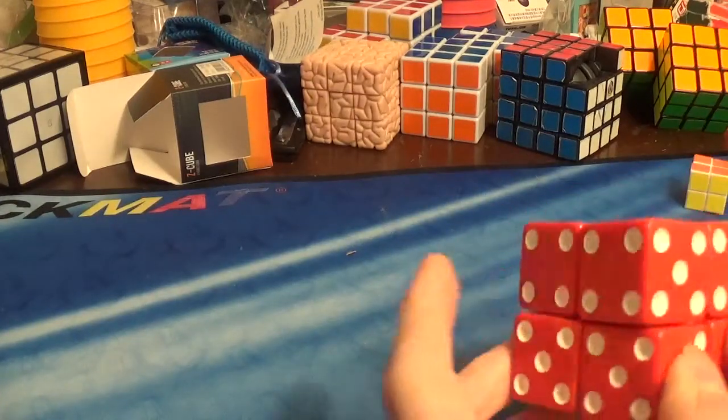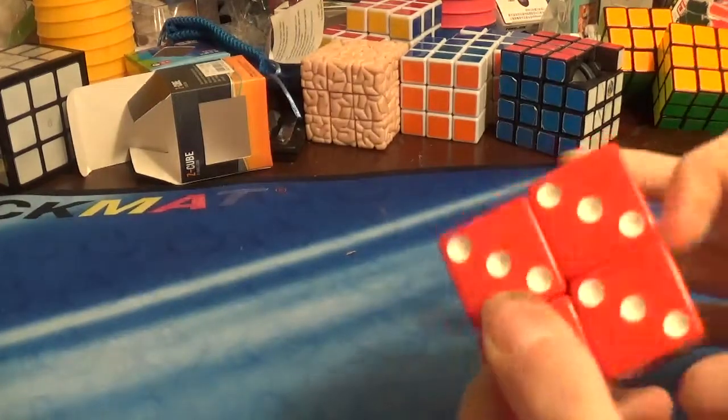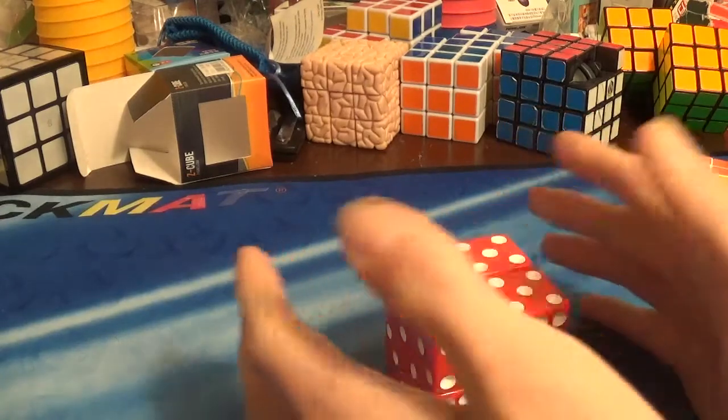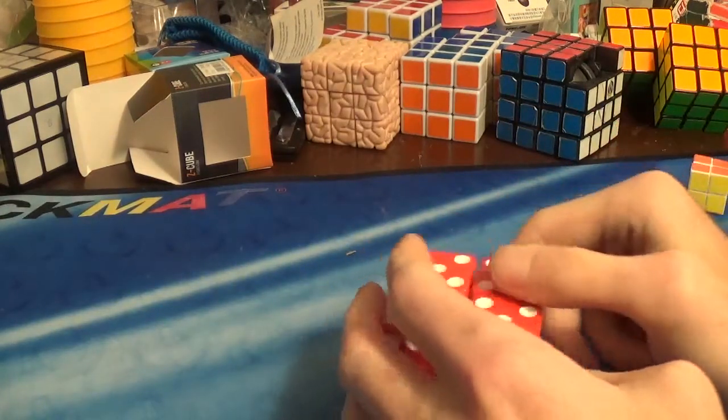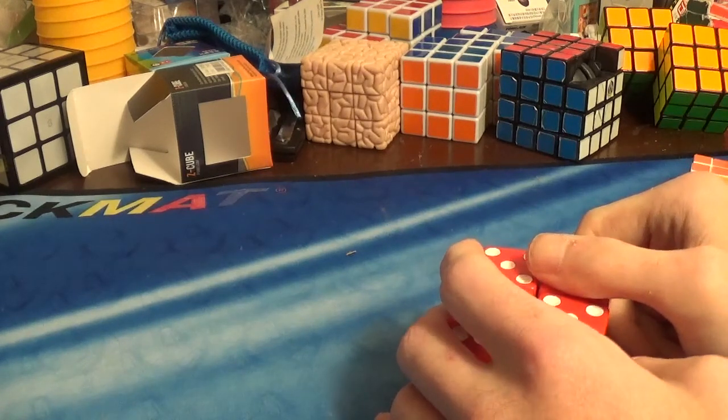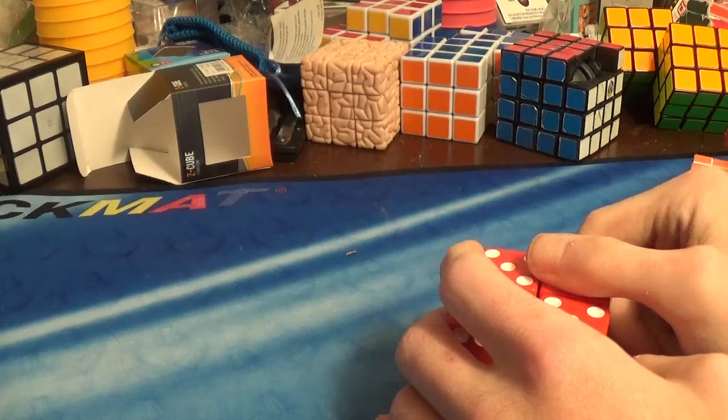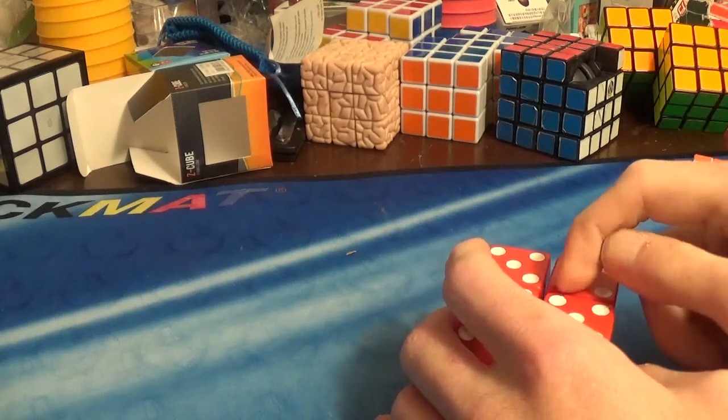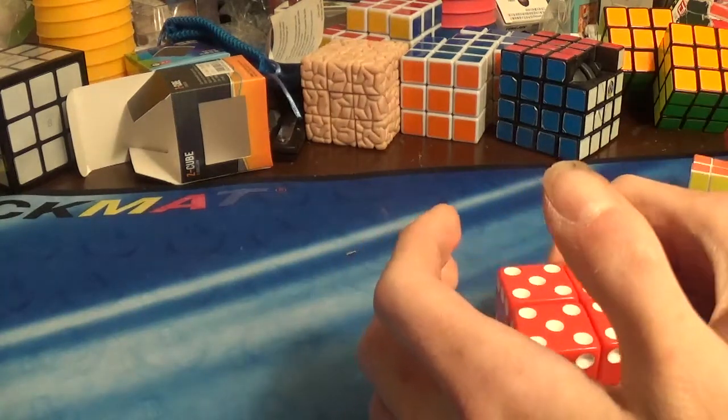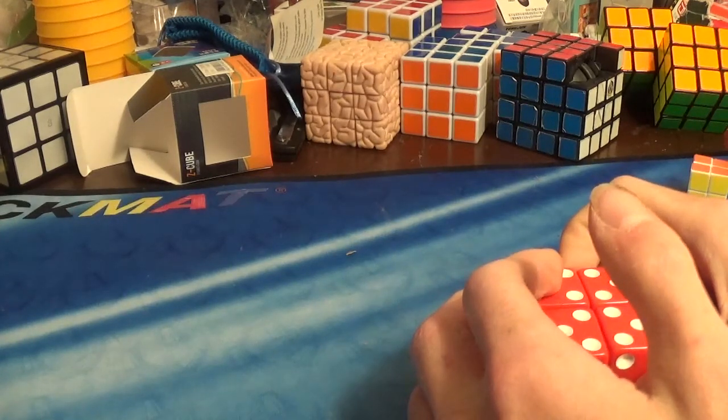And it's solved. So yeah, rough estimate of taking the time to make this. It took me probably about like an hour and a half per dice. So that's times 8. So that's like about maybe 12 hours or so.